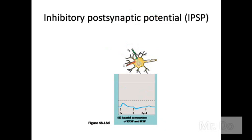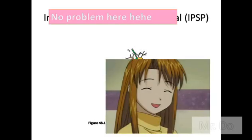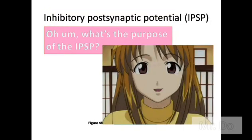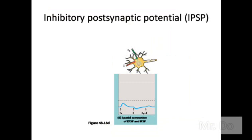The opposite of EPSP is IPSP, which stands for inhibitory post-synaptic potential. So when you have one signal exciting the dendrite of the neuron, you can also have another one that is inhibiting the action potential from happening. This causes no action potential to be created because it's being inhibited. Since we already know what EPSP is, we can figure out what IPSP stands for. The purpose of the IPSP is to negate the action potential.